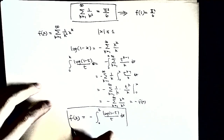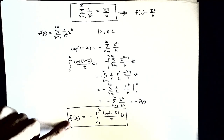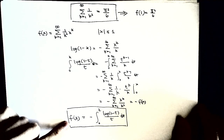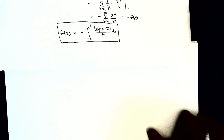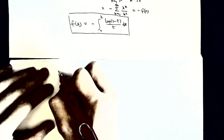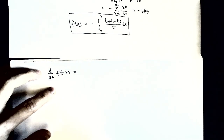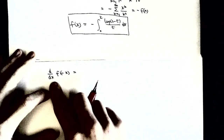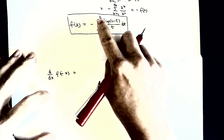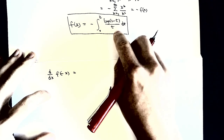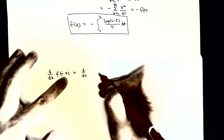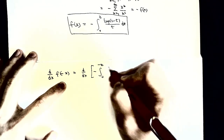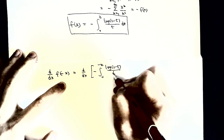At this stage we have an integral representation of the function. Our next step is to construct a relationship of this function by plugging in different values. When we plug in f(minus x) and perform the differentiation by Leibniz's rule, we plug in minus x. This becomes the integral from 0 to minus x of log(1 minus t) over t dt. We plug in minus x, so that will become log(1 plus x) over x.